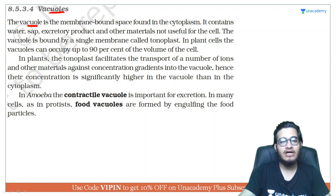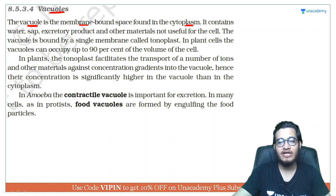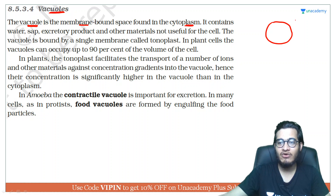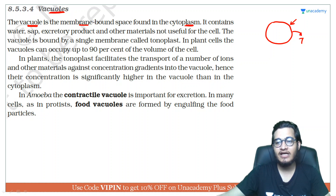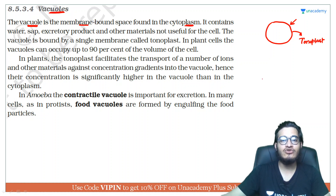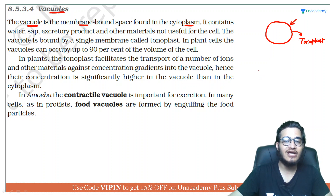Vacuole is a membrane-bound space found in the cytoplasm. It is a membrane-bound organelle surrounded by a single membrane called the tonoplast. In plant cells, the vacuole can occupy up to 90% of the cell's space.